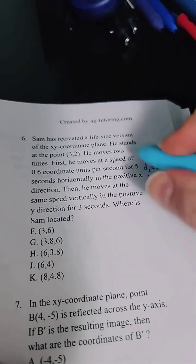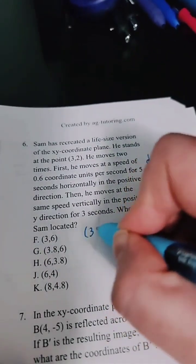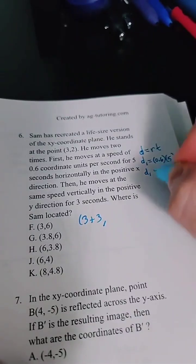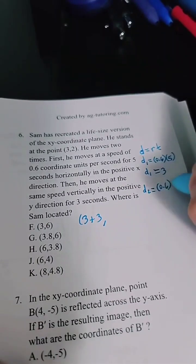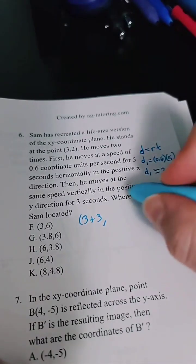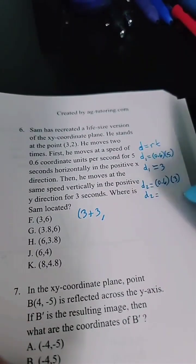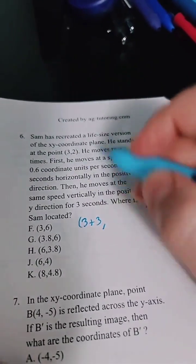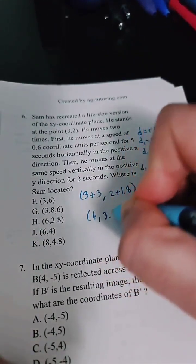For the second movement, the same rate of 0.6 is used, but for three seconds going in the positive y direction. So 0.6 times 3 equals 1.8. Since he's going in the positive y direction, we add 1.8 to 2, giving 3.8. So Sam ends up at (6, 3.8), which is answer H.